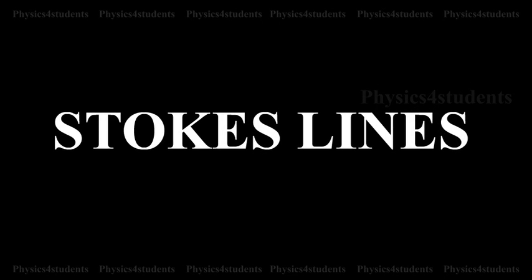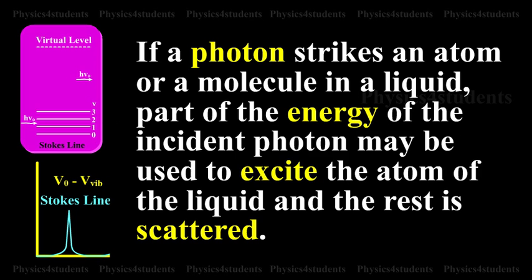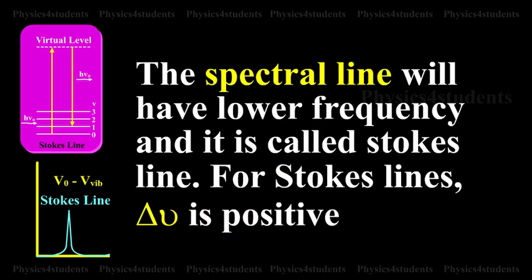Stokes Lines. If a photon strikes an atom or a molecule in a liquid, part of the energy of the incident photon may be used to excite the atom of the liquid and the rest is scattered. The spectral line will have lower frequency and it is called Stokes line.